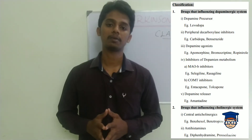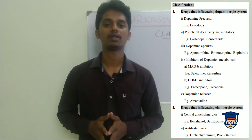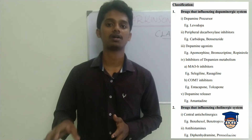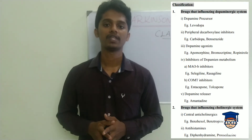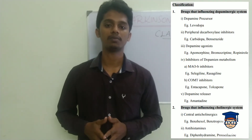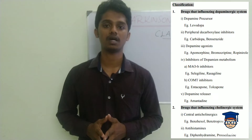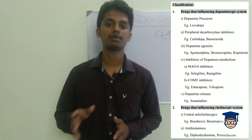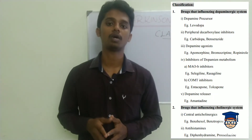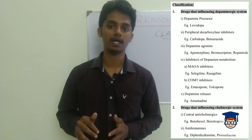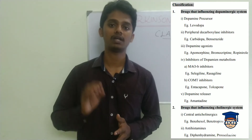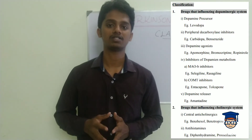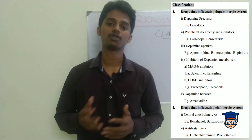Dopamine metabolism involves two enzymes: one is MAO-B — monoamine oxidase B — and the other is COMT — Catechol-O-Methyl-Transferase. By inhibiting these enzymes, dopamine metabolism is reduced, increasing the availability of dopamine in the brain, which helps manage disease progression.